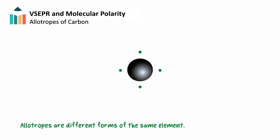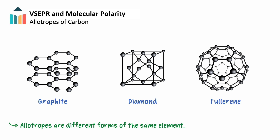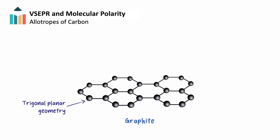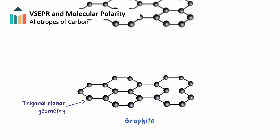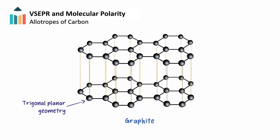Not only does the nature of covalent bonding alter the properties of different substances, but variations in covalent bonding can alter the properties of the same substance. With its four valence electrons, carbon can bond in different ways, creating different forms of the same element called allotropes. The three different allotropes of carbon are graphite, diamond, and fullerene. Each carbon in graphite forms a trigonal planar geometry, creating sheets of repeating hexagonal shapes. Layers of these graphite sheets stack together and are held in place by weak London dispersion forces.